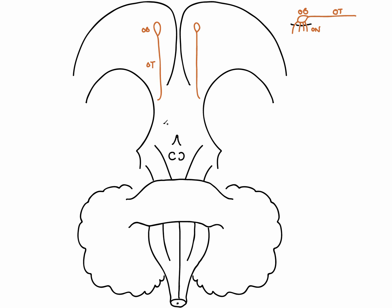Cranial nerve number two is again an outgrowth from the forebrain — this is our optic nerve. We can see the optic nerves coming away from the eyes receiving light information, the optic chiasma, and then the two optic tracts. The optic nerves pass from the eye through the superior orbital fissure to converge at the optic chiasma, then radiate to the forebrain via the optic tracts.